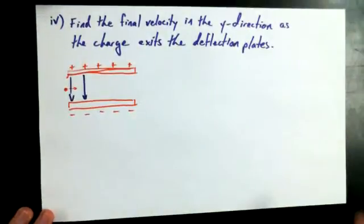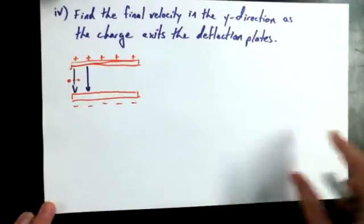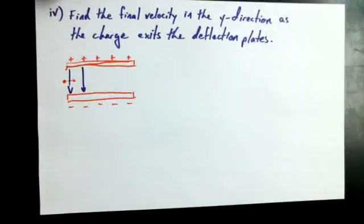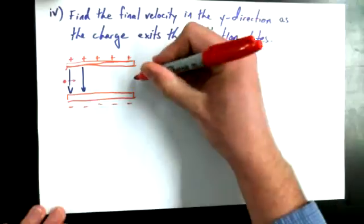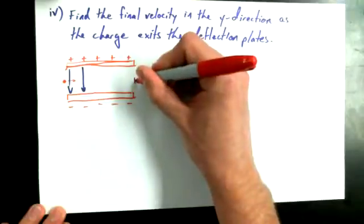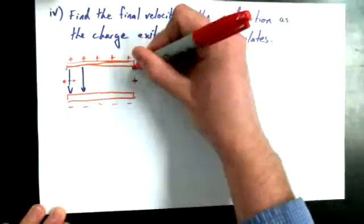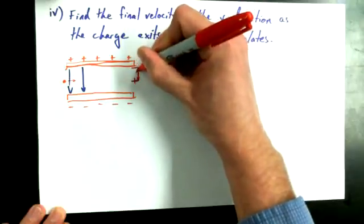What we said previously was that we know how long it takes for the charge to traverse these two plates, that is to get from one side to the other side as it travels at its constant X velocity. In that time it gets deflected vertically upwards, and we found out how far it gets deflected vertically upwards. It gets deflected from this original height up to this final height, so we found a delta DY.